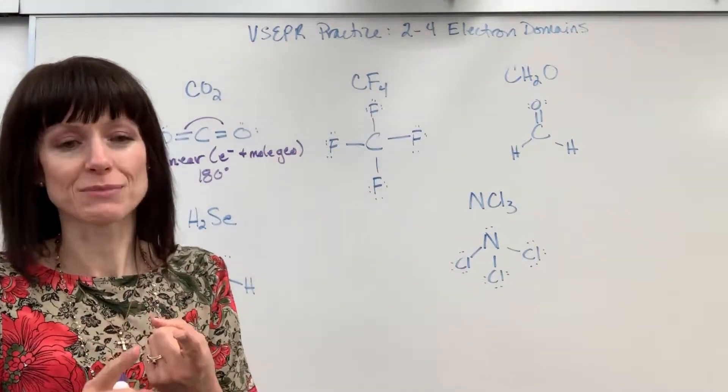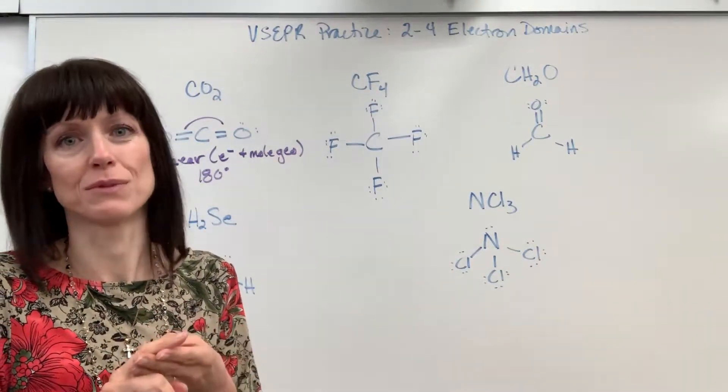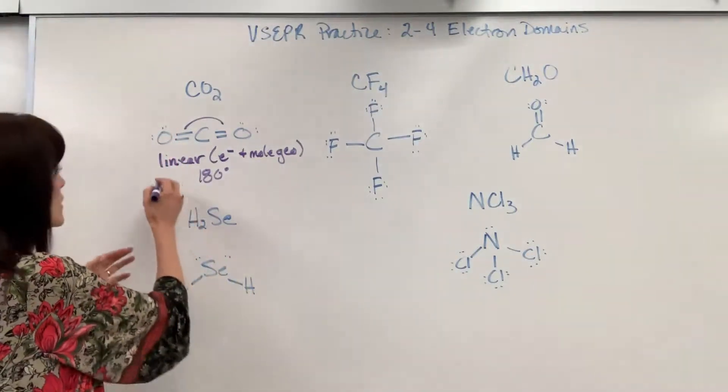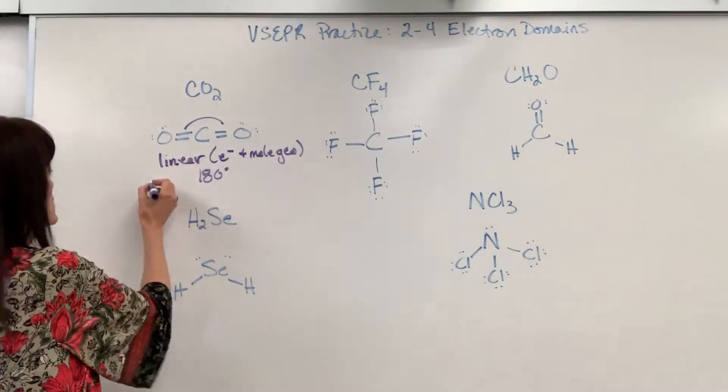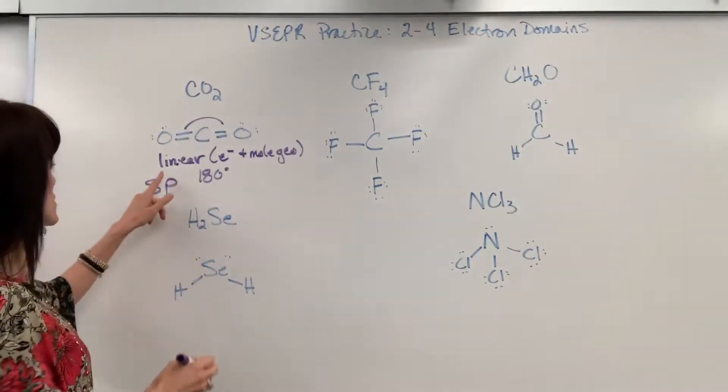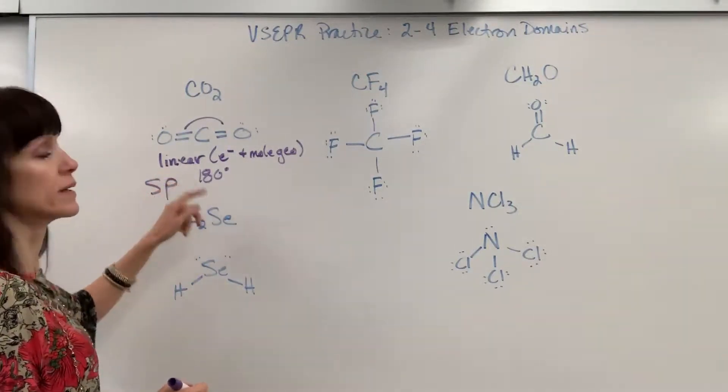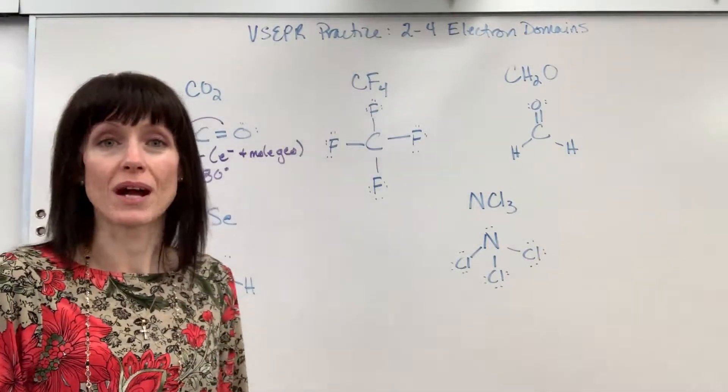S, kind of a maximum exponent of one. P, maximum of three. And then D is a two. So if I've got two electron domains, it's going to be SP. It's understood to be a one and a one. One plus one is two. So that would be our hybridization.